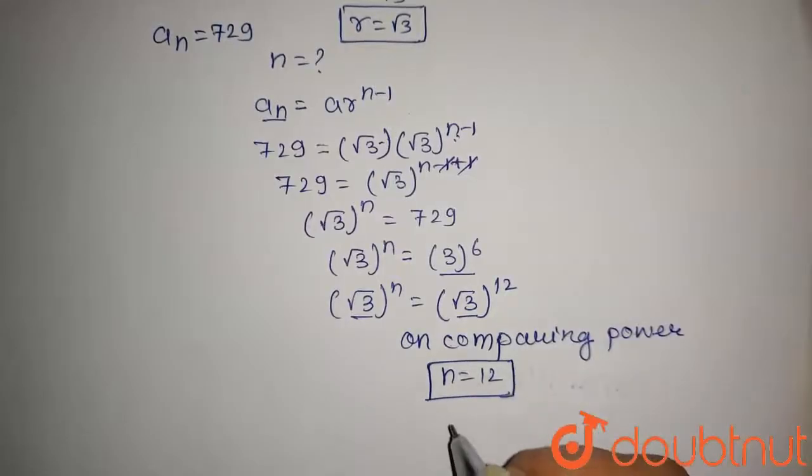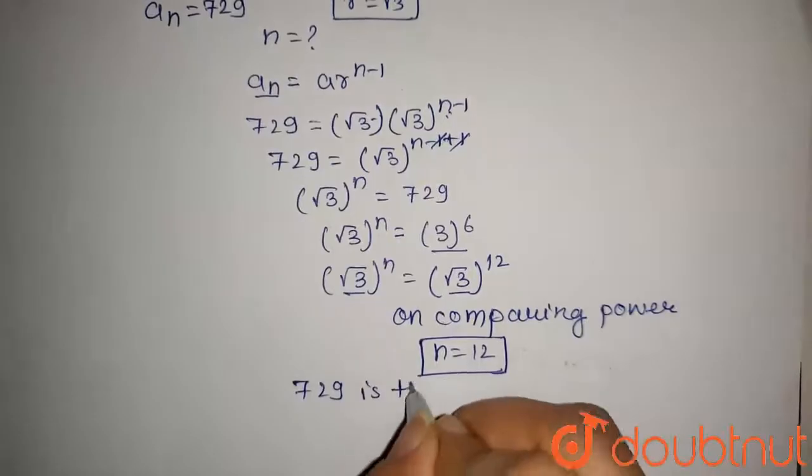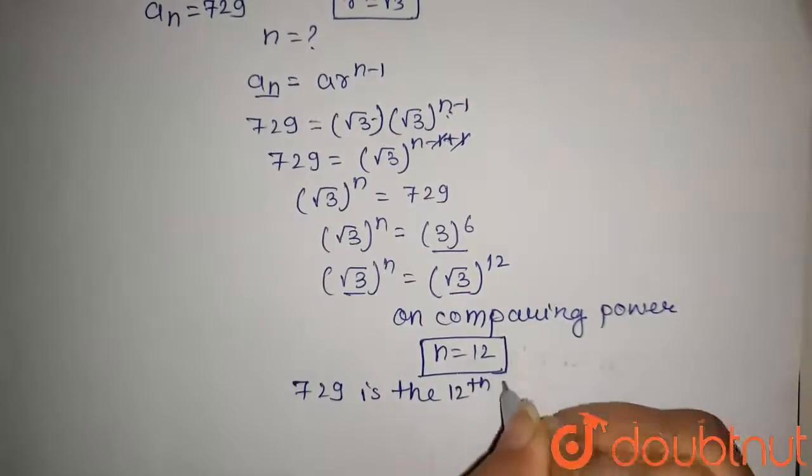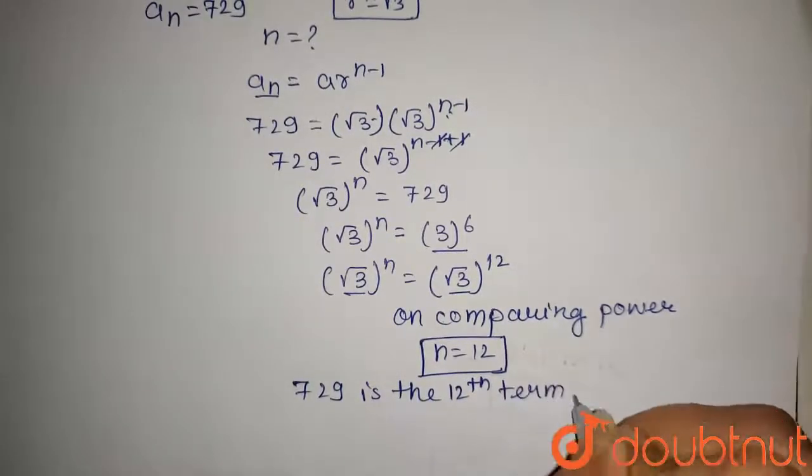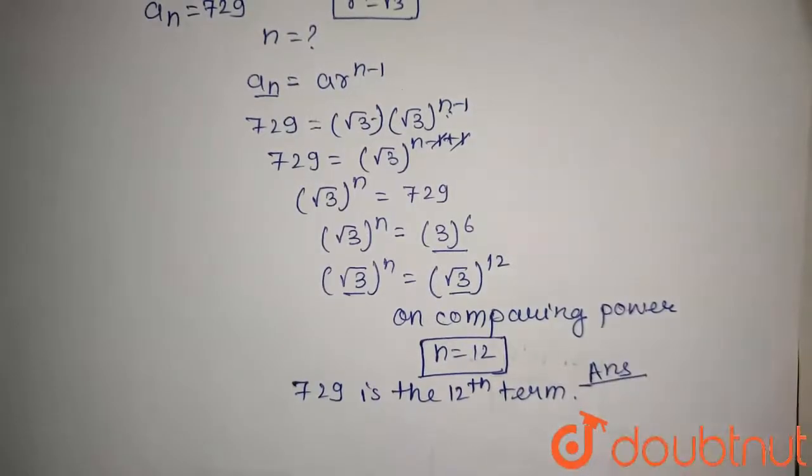729 is the 12th term of the given progression. This is our answer of this question. Thanks for watching.